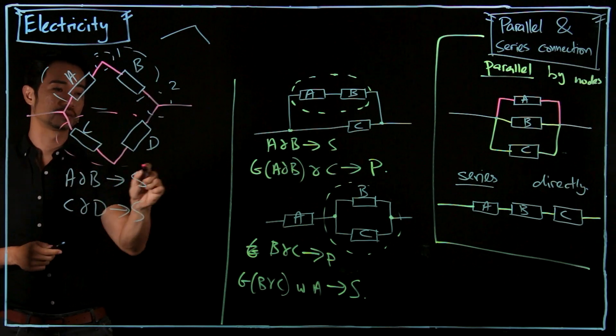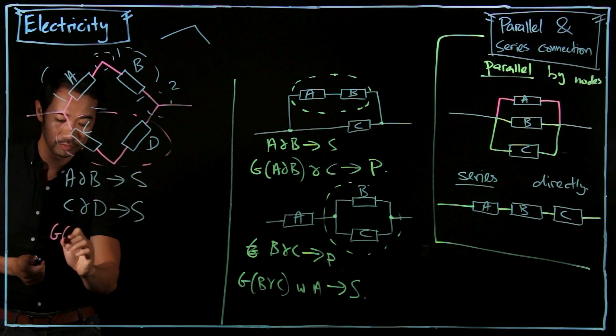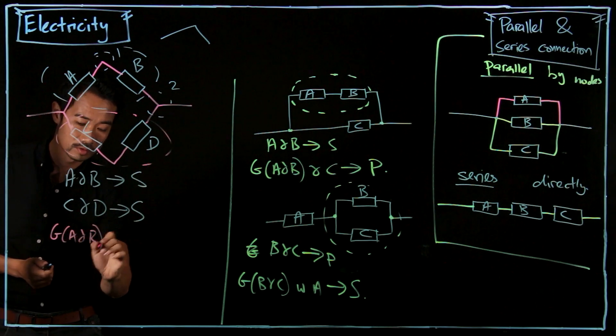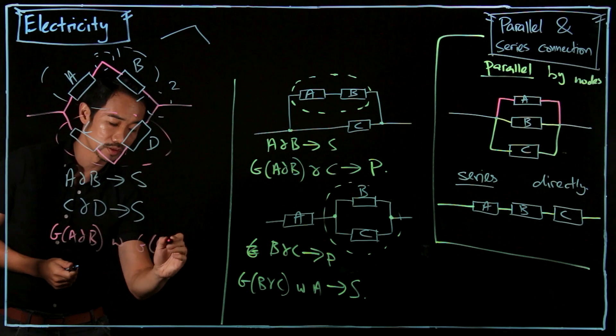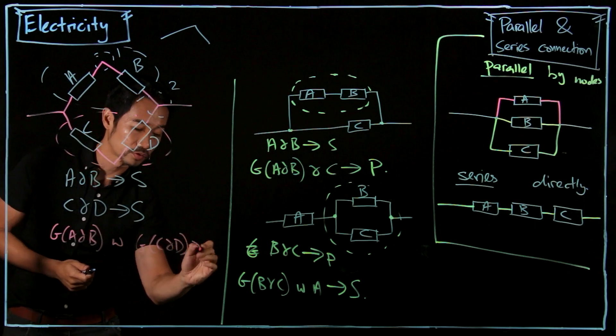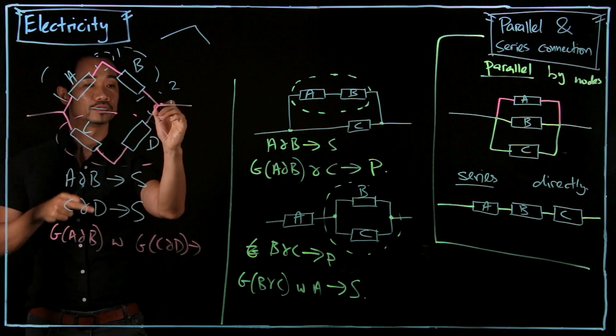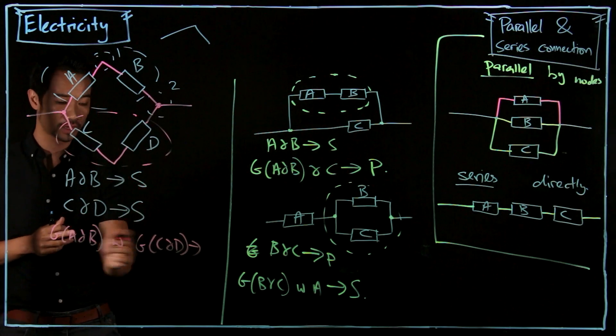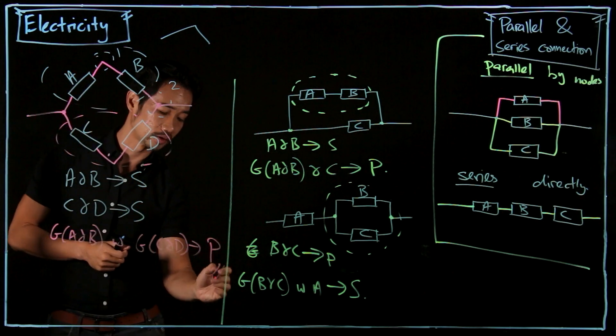The blue group and the pink group. So group A and B with group C and D. They have to pass through. You see? The nodes here or here. So their connection is in parallel.